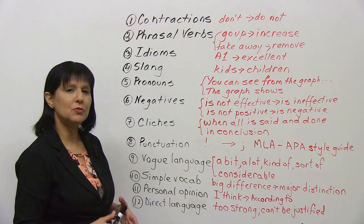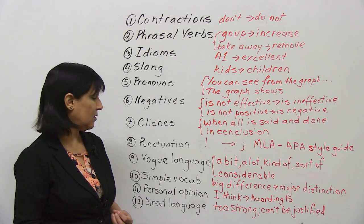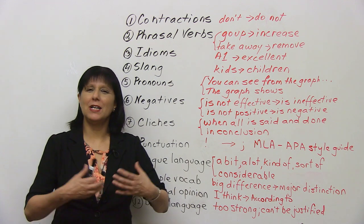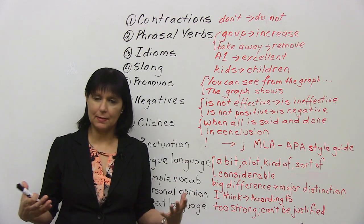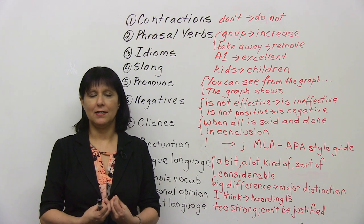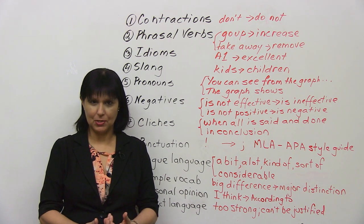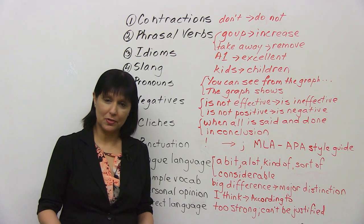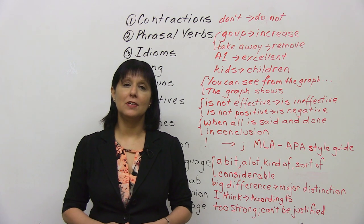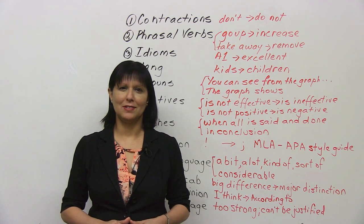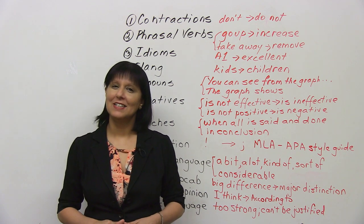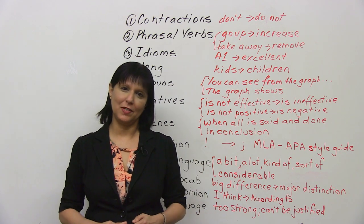And last, don't use language that is too direct or too strong, because then it cannot be justified. You can't make very broad claims — you have to be able to justify anything that you write. In academic English, your goal is to speak like your professor and write like your textbook. If you can do that, you'll probably do very well in the academic world and also in your career.